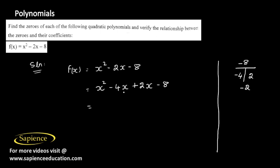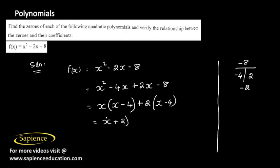From the first two terms we take x as common: x(x - 4). From the last two terms we take 2 as common: +2(x - 4). This gives us (x + 2)(x - 4), taking (x - 4) as common.